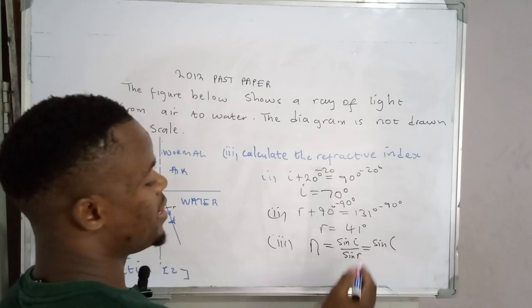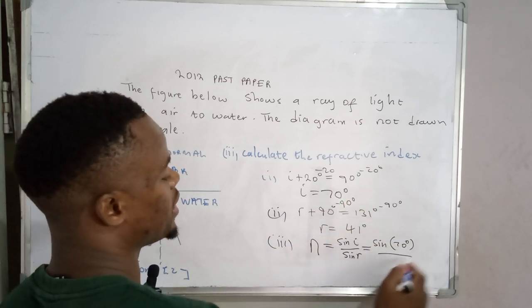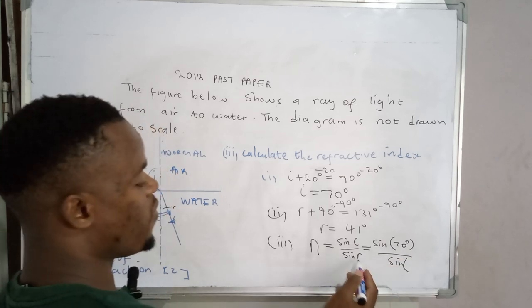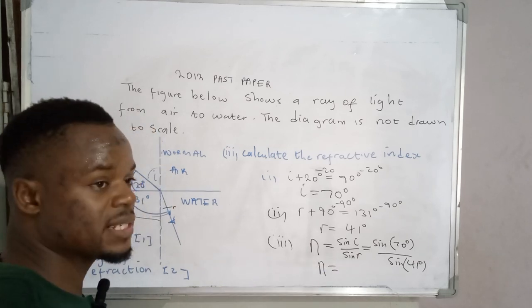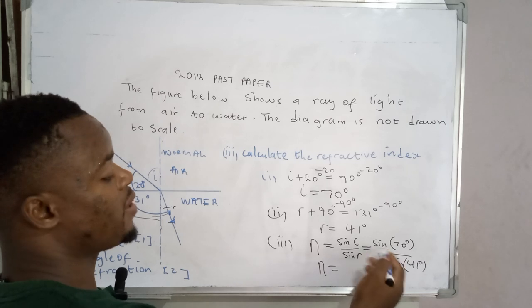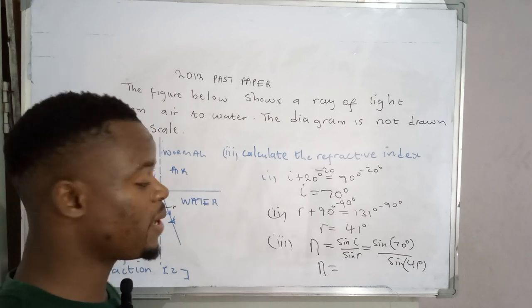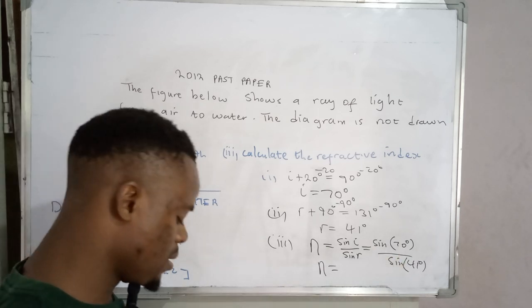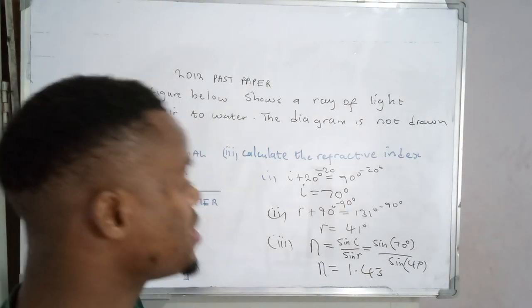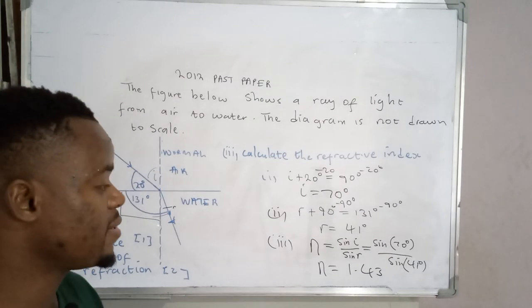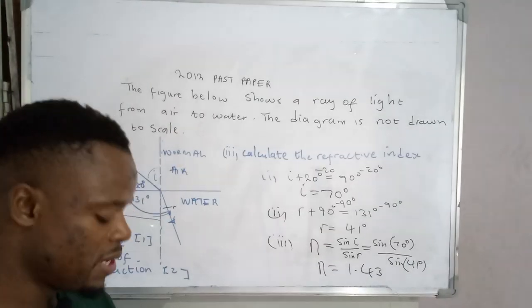So now what we need to do is simply plug in the angle of incidence, which is 70 degrees, and then the angle of refraction, which is 41 degrees. So when you punch this into your calculator—in most cases, don't forget to punch the function sine. Don't simply write the angle there. Don't forget to do that. So when you punch that, the answer that you're going to find is 1.3. Remember, a refractive index has no units, so you have to leave it like that. So that's how you go about it. Thank you so much for watching the video today. Stay blessed.